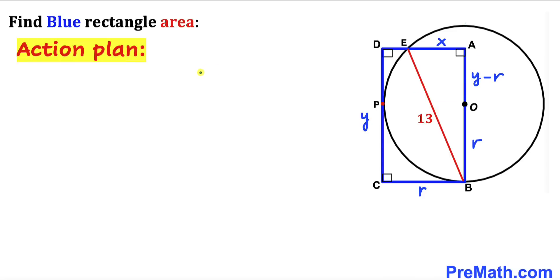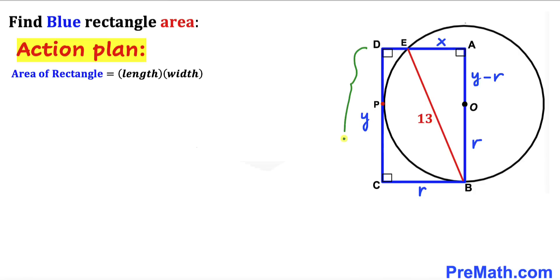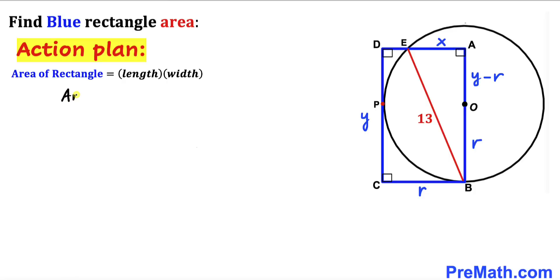Our action plan: we want to calculate the area of blue rectangle ABCD. Recalling the area formula — area equals length times width — the length is y and the width is r. So the area equals y times r, and our task is to find the value of y times r.